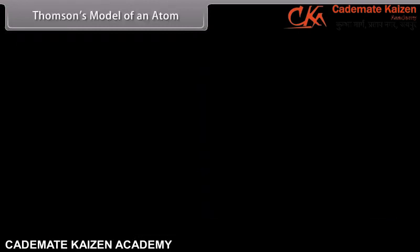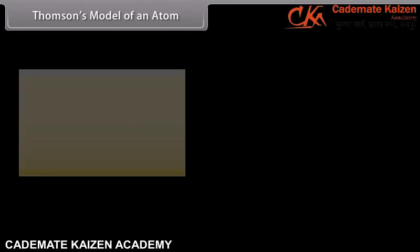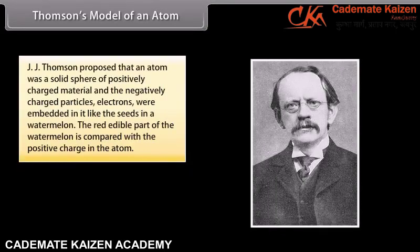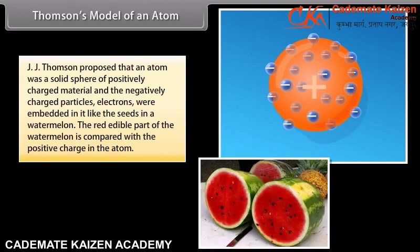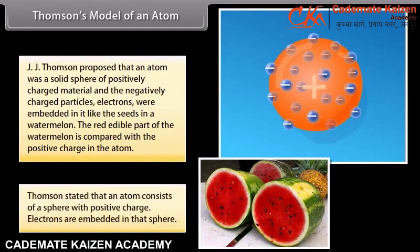Thomson's Model of an Atom. J.J. Thomson proposed that an atom was a solid sphere of positively charged material, and the negatively charged particles, electrons, were embedded in it like the seeds in a watermelon. The red edible part of the watermelon is compared with the positive charge in the atom. Thomson stated that an atom consists of a sphere with positive charge, and electrons are embedded in that sphere.